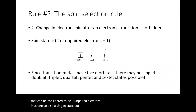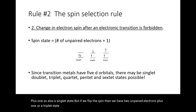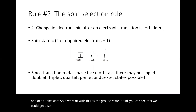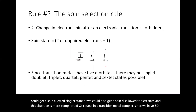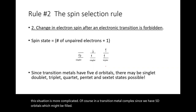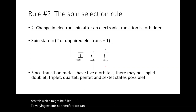If we flip the spin, we get two unpaired electrons plus one — a triplet state. Starting from the singlet ground state, we can reach either a spin-allowed singlet excited state or a spin-disallowed triplet excited state. This situation is more complicated in a transition metal complex, since we have five d orbitals which may be filled to varying extents, giving rise to multiple possible ground and excited states.